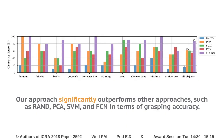This plot shows the grasping success rate of our approach and other approaches on the robot with soft hands. Our 3D CNN approach achieves 87% successful grasping for previously unseen objects, and it clearly outperforms other approaches such as random selection, principal component analysis, support vector machine, and fully connected neural network approaches.